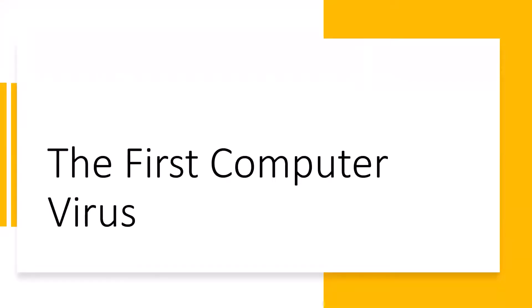The first computer virus, called the Elk Cloner, was written as a practical joke by Rich Skrenta, a 15-year-old high school kid in 1982. It spread to other computers by copying itself to any floppy disk inserted into the computer. Once a floppy disk was infected, it would infect all other computers that used the disk. An infected computer would display a short poem on every 50th run. Most viruses are written in scripting languages for Microsoft programs.